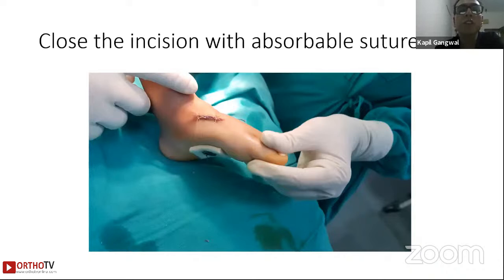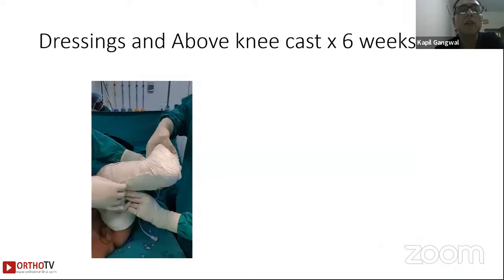Once that's done, close the incision with absorbable sutures on the medial and lateral sides, then cast in full correction — full dorsiflexion, full abduction, external rotation.